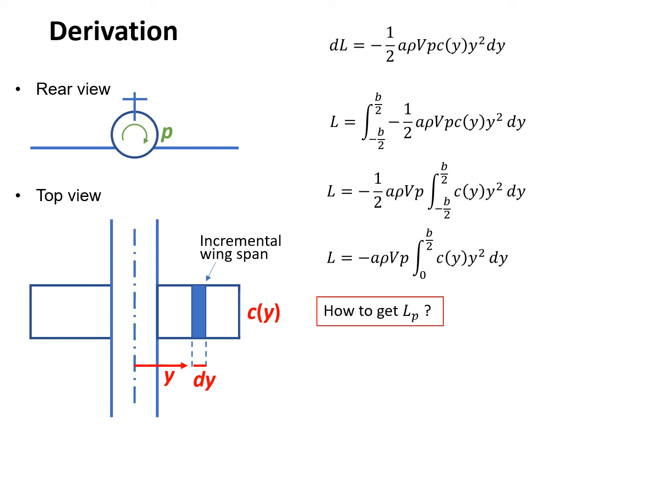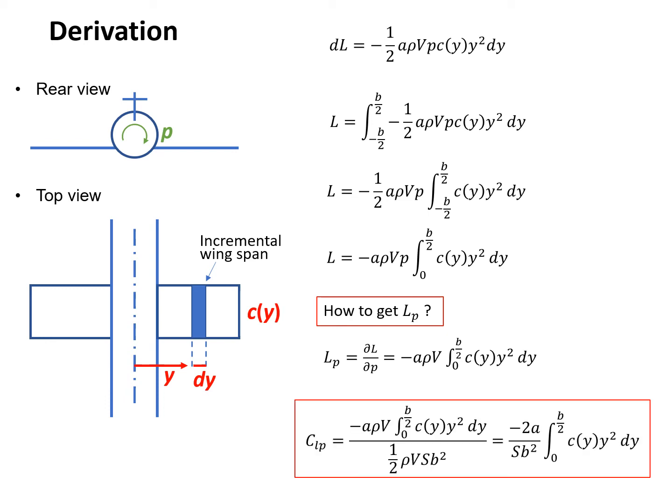The next step is to get LP, which is partial L partial P. We just divide P from L. That's the LP in dimensional form. How can we get its non-dimensional form, which is CLP? If we use the table and find the denominator, which is half rho VS B squared, and do some elimination, we have the final answer. This is the CLP derivation for general wing.